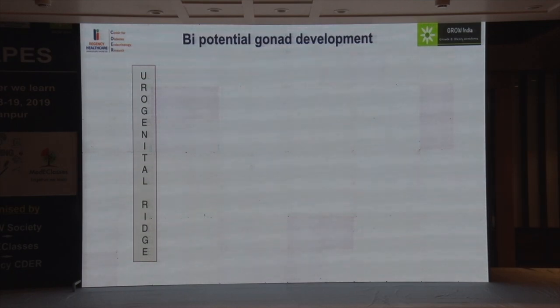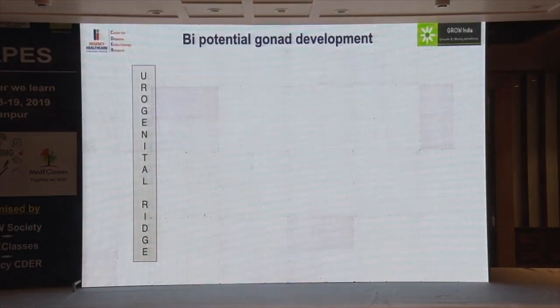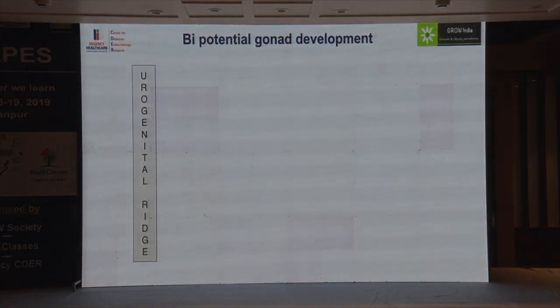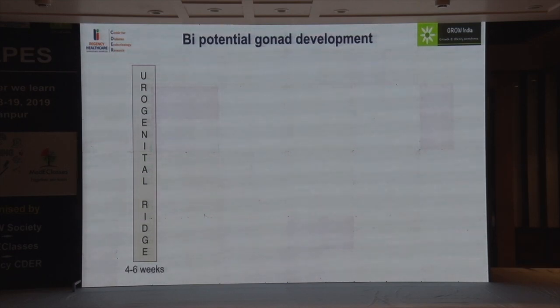We'll start with gonad development. The first step in overall development is the development of the gonad from the urogenital ridge. The urogenital ridge is the common area of three organs: the gonads, adrenals, and kidneys. These three are formed together, and this happens by around four to six weeks — very early in gestation.